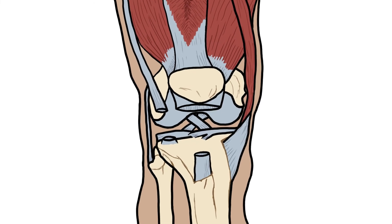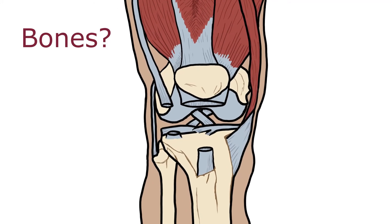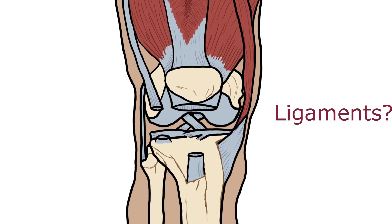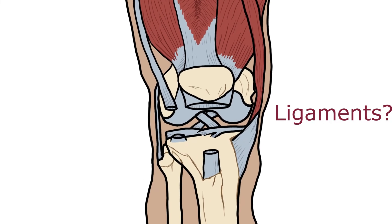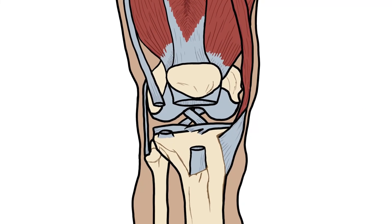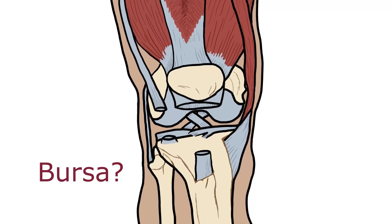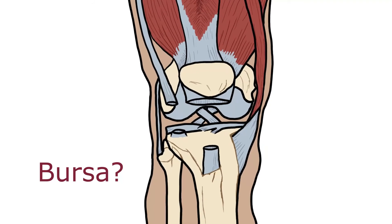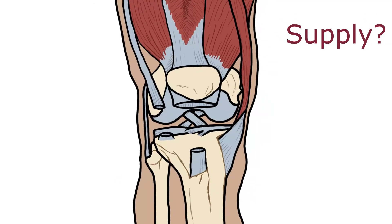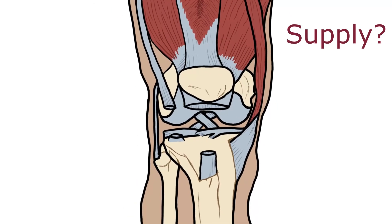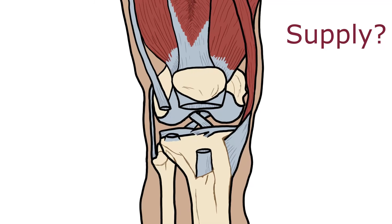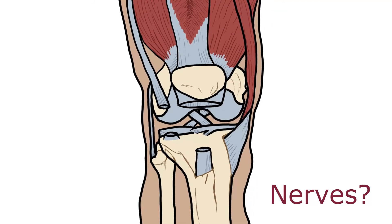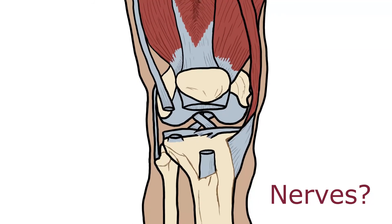Alright, let's rewind. Three bones: femur, tibia, and patella. Four ligaments: medial and lateral collateral, anterior and posterior cruciate. Four bursas — some parrots imitate people: suprapatellar, prepatellar, infrapatellar, and pes anserine. Blood supply: popliteal artery, recurrent tibial, geniculate. Four nerves: obturator, femoral, common peroneal, and tibial.